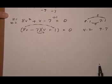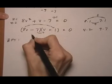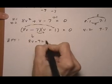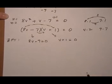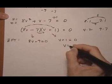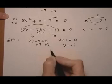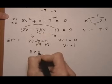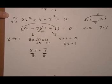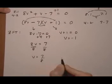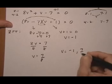Next step after factoring is the zero factor theorem. We say 8v minus 7 equals zero, or v plus 1 equals zero. The second one is quick: subtract 1 from both sides and v equals minus 1. For the first one, add 7 to both sides to get 8v equals 7, then divide by 8, and we get v equals 7 over 8. So our final solution is v equals minus 1 or 7 over 8.